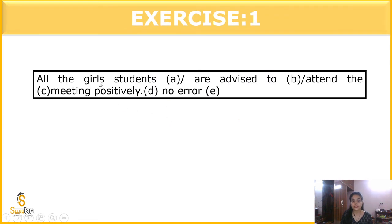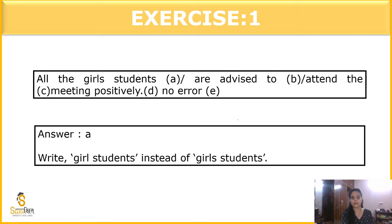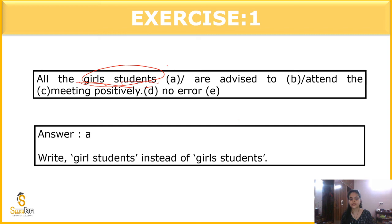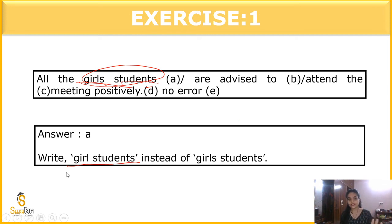The next question: 'All girls students are advised to attend the meeting positively.' The error is in part A. We do not need 'girls and students' — if we want to say all girls should come, we simply use 'all the girls students are advised to attend the meeting positively.'